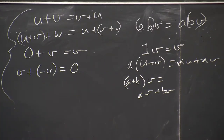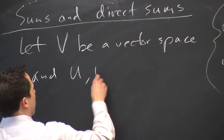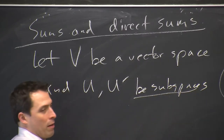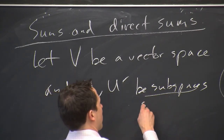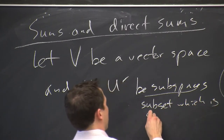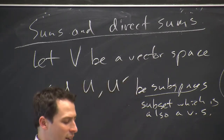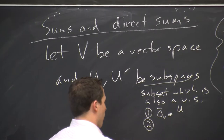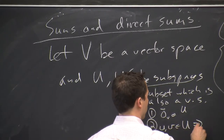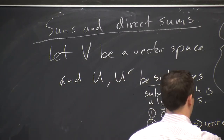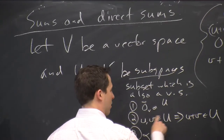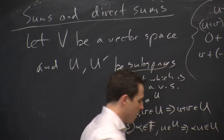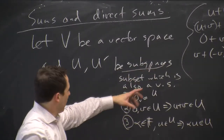Let V be a vector space, and we're going to look at two subspaces of V — let U and U' be subspaces. Remember that to be a subspace of a vector space, we're talking about a subset which is also a vector space. We have a criterion for that: we check that 0 is in the subspace, that it is closed under addition — U and V in U implies U plus V in U — and closed under scalar multiplication: if alpha is in F and U is in U, then alpha U is in U.